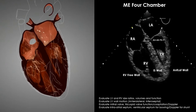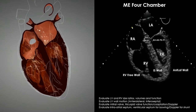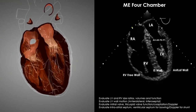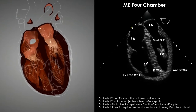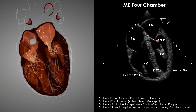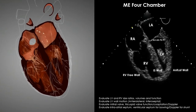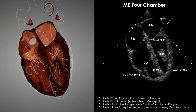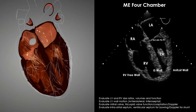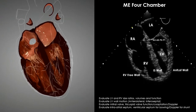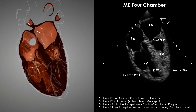In this mid-esophageal four-chamber, what immediately pops out is the RV-to-LV ratio — the RV is actually larger than the LV, indicating RV dysfunction. You then examine coaptation of the mitral valve, potentially adding color Doppler to see if MR is responsible for the large RV, and assess the anterolateral and infero-septal walls for wall motion abnormalities.